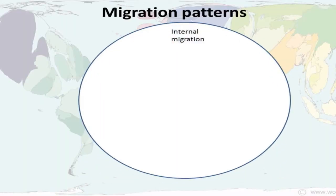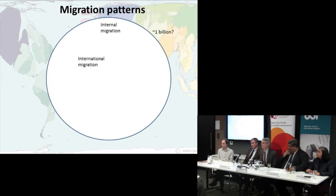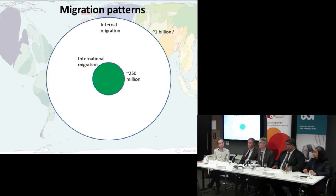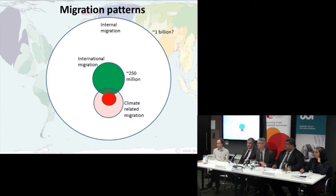Before going further, here are some numbers on the current migration situation today — not climate migration specifically, but all migration. Internal migration is a massive guess, because there's not a lot of data, but it's about a billion. International migration is about 250 million on the high side, with a general four-to-one ratio assumed. The question is how many of those will be climate-related migrants.